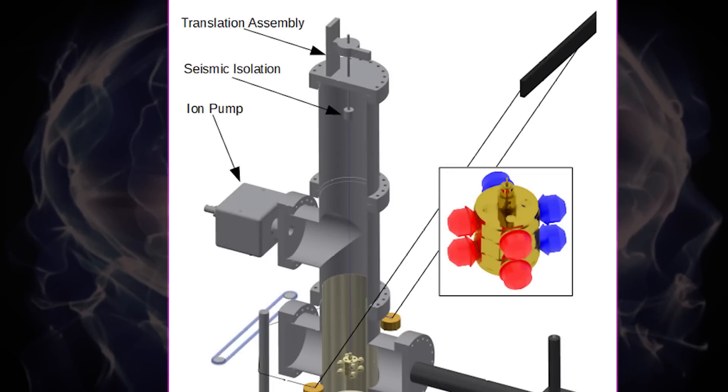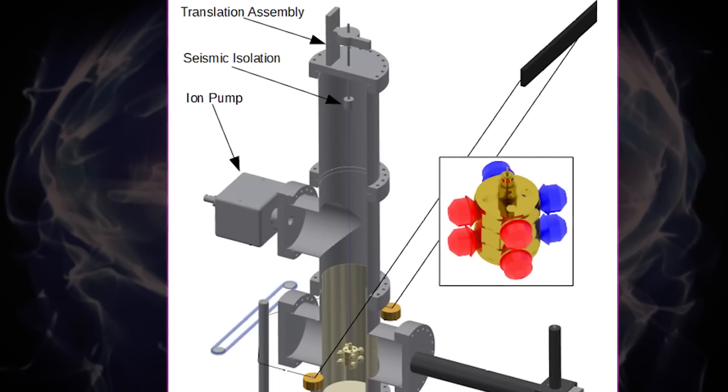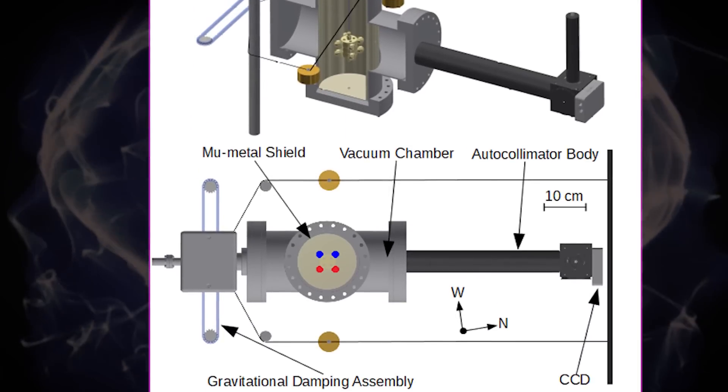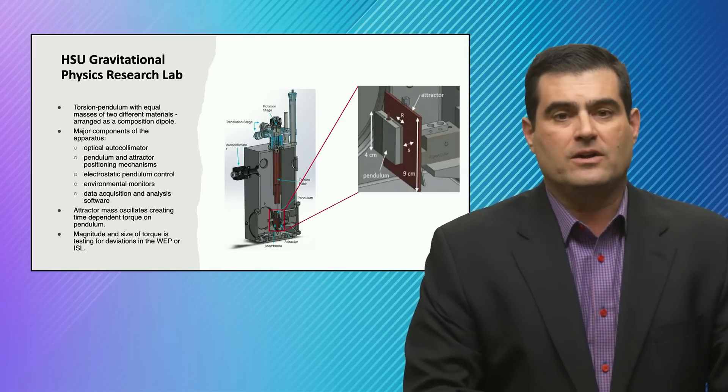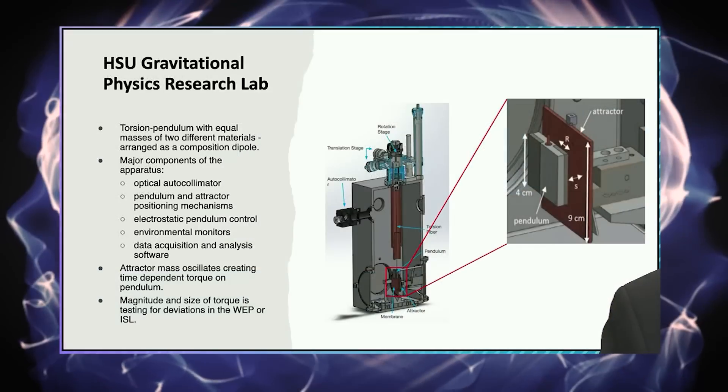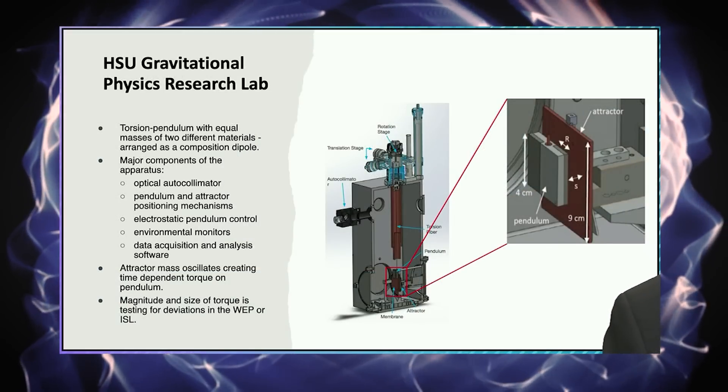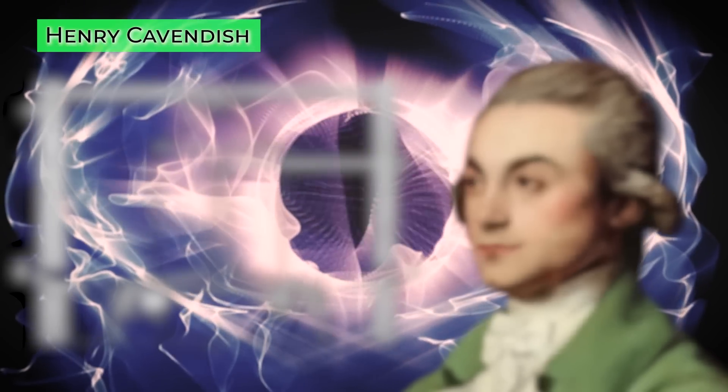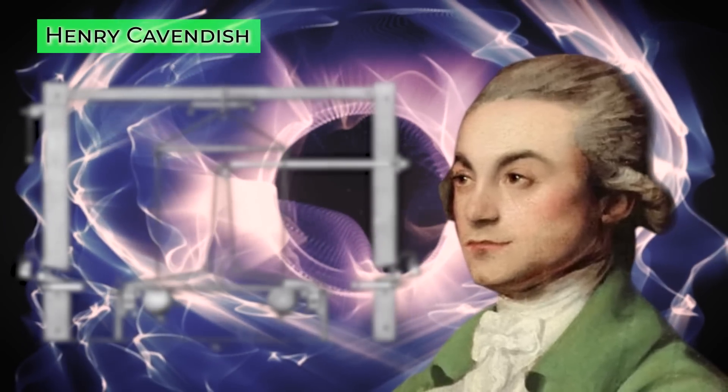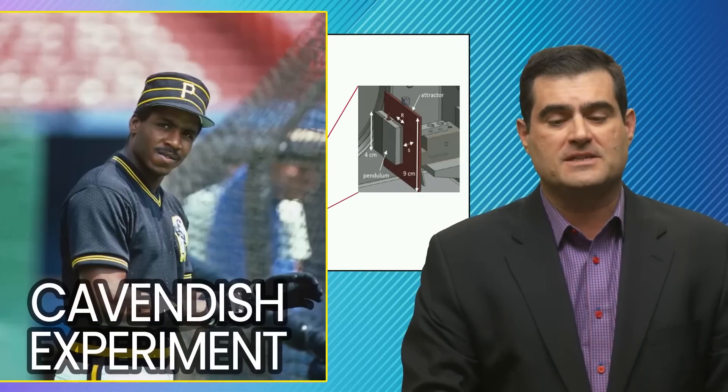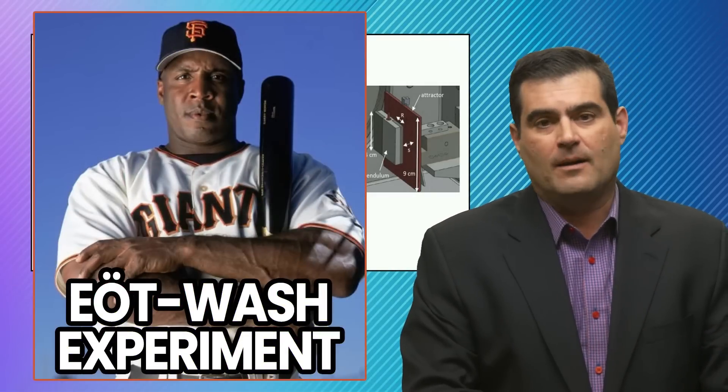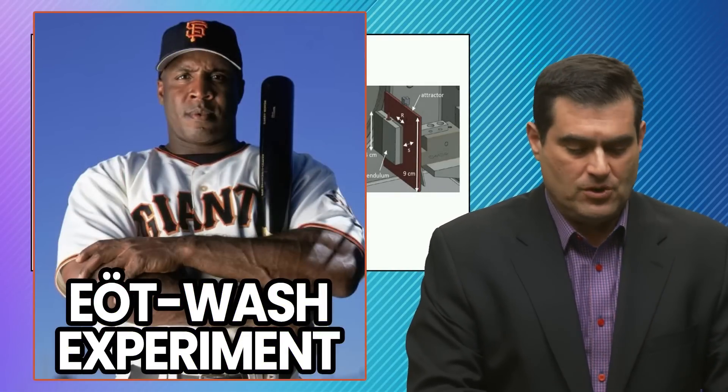So they've got a torsion pendulum with equal masses, two plates separated by some distance, and this makes what's called a composition dipole if they're different materials. You could do it with similar materials or different materials. The actual foundation of this experiment goes back to Cavendish in the 1700s, making these measurements of torsion pendulums as well. It's a classic experiment we do in physics labs, but this is on steroids with the Humboldt State University's team and approach.